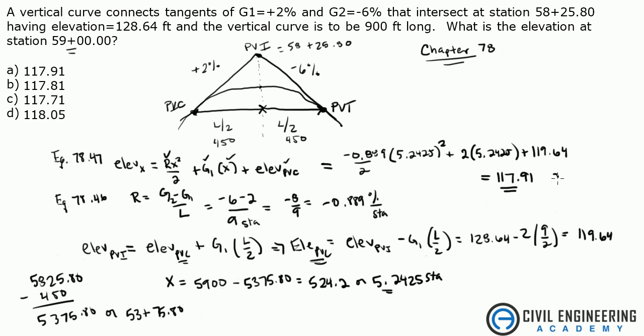That is answer A. And I guess you could check to see if that makes sense. If your grade is going up and then it's going down, you know the stationing is past PVI at 59+00. So you know the elevation has to be less than what is given. It's given at 128.64, so it makes sense that it's less than that. So I hope that helps.